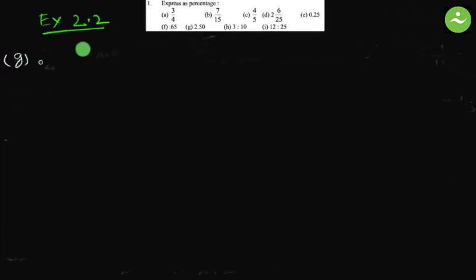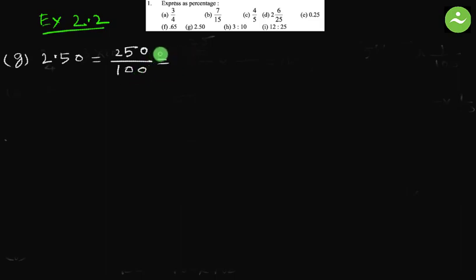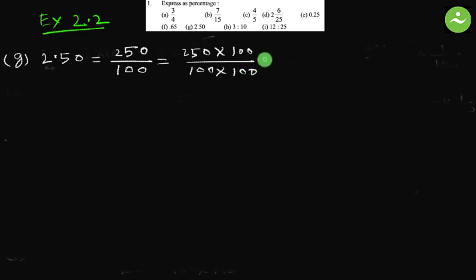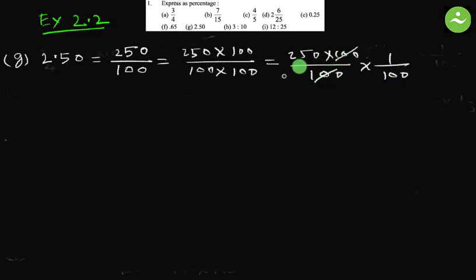Part g: 2.50. First we convert the decimal to a fraction, then convert to percentage. 2.50 equals 250 by 100. Multiply both by 100: 2.50 times 100 equals 250, divided by 100, multiplied by 100. Separate 1 by 100: 250 multiplied by 100 divided by 100 multiplied by 1 by 100. Simplify: the 100s cancel. The answer is 250 percent.